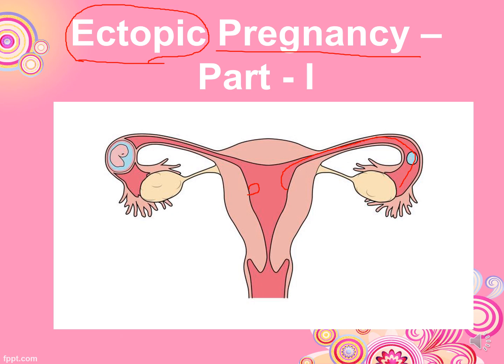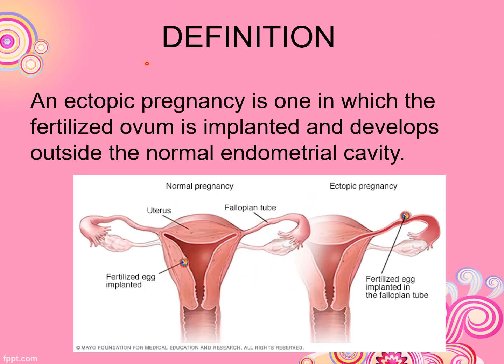In ectopic pregnancy, implantation occurs outside the uterus. It is a type of ectopic pregnancy. The definition is: an ectopic pregnancy is one in which the fertilized ovum is implanted and develops outside the normal endometrial cavity — that is, outside the uterus.